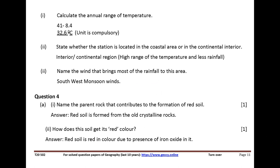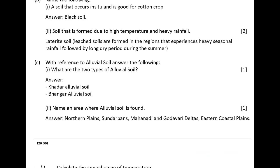Question 4. Name the parent rock that contributes to the formation of red soil. Answer: red soil is formed from the old crystalline rocks. How does this soil get its red color? Answer: red soil is red in color due to the presence of iron oxide in it.